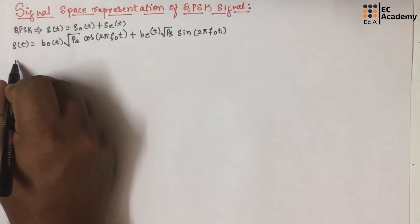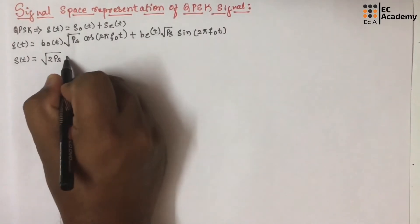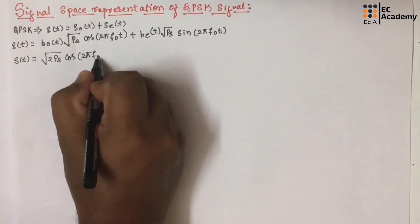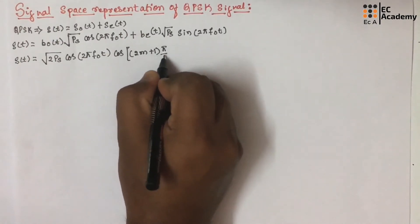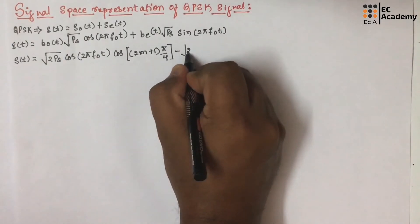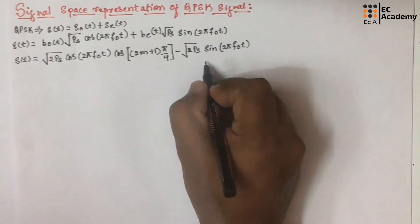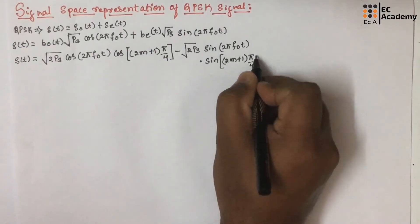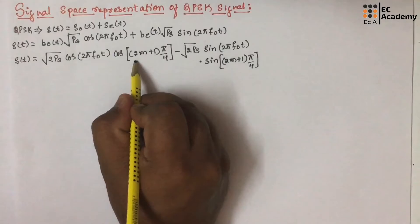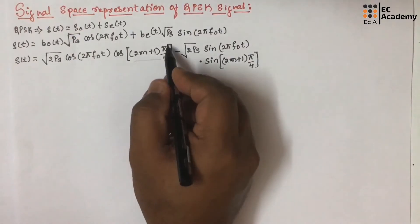Now the above expression we can represent as S₀(t) = √(2Ps)·cos(2πF₀t)·cos((2m+1)π/4). We have taken the term (2m+1)π/4 because in our previous lecture we understood that each combination of two successive bits will produce a phase shift of π/4.